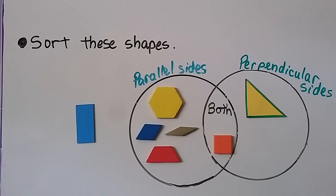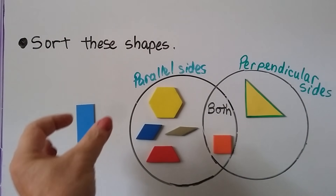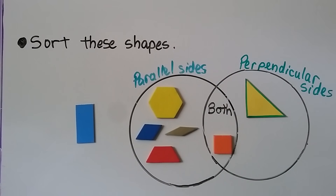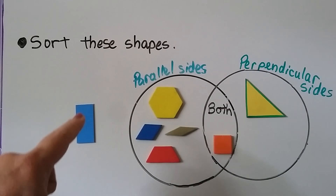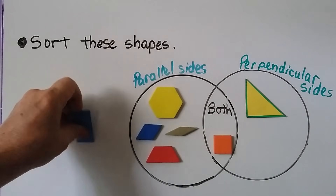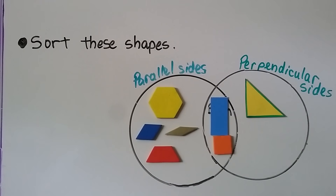So the square is both parallel and perpendicular — we could put it in between because it's both of them. What about this rectangle? Does it have parallel sides? The top and bottom are parallel, and the left and right are parallel sides. What about perpendicular sides that make right angles? Yes — just like the square, it's got four right angles. So it's got parallel sides and perpendicular sides. We can put it in the middle with both, just like the square.